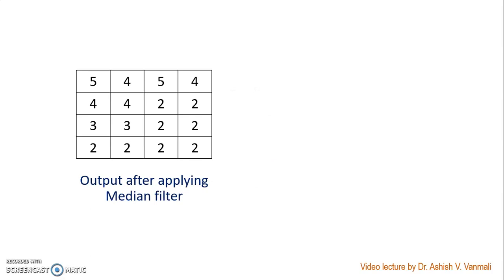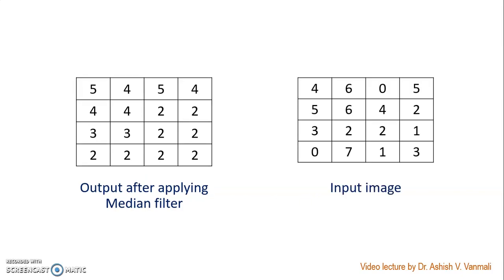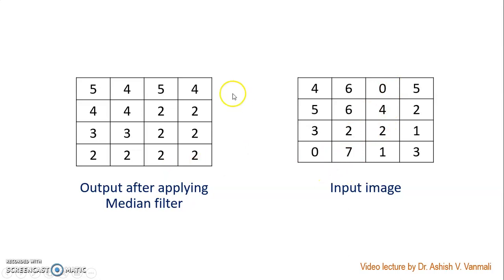We repeat this operation for all sub-images and get the final result, which is already in integer form. Looking at the input image, the upper region has higher (brighter) values while the lower region has lower (darker) values. However, there is a value of 0 — a black pixel — in the bright region, and a value of 7 — a white pixel — in the dark region. This indicates salt-and-pepper noise present in the image. If you observe the output, that salt-and-pepper noise is eliminated by the median filter.